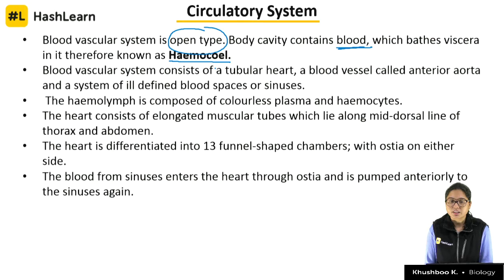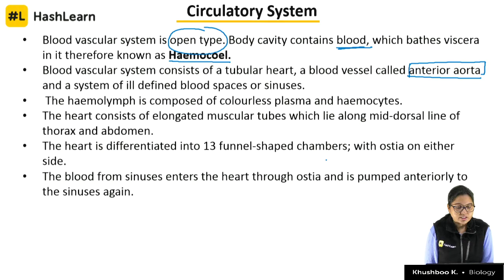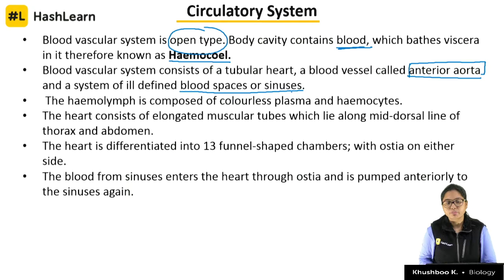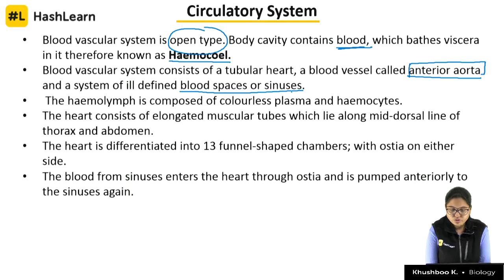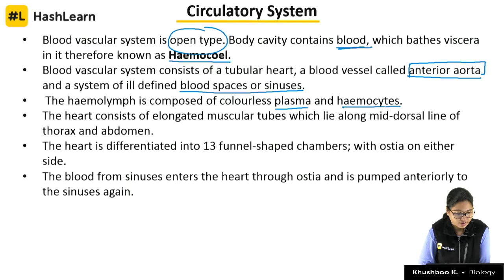The blood vascular system consists of a tubular heart, a blood vessel called the anterior aorta, and a system of ill-defined blood spaces called sinuses. The anterior aorta is the only blood vessel present; otherwise there are no blood vessels. The hemolymph is composed of colorless plasma and hemocytes. Hemocytes are equivalent to WBCs in our case. Notably, the hemolymph is not responsible for carrying oxygen — that is entirely done by the tracheal system. The heart consists of elongated muscular tubes lying along the mid-dorsal line.